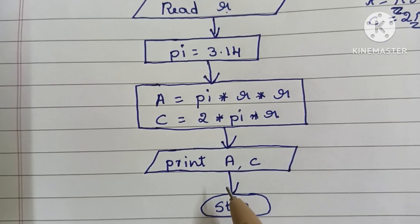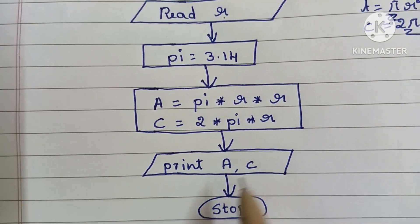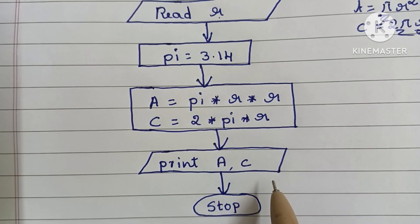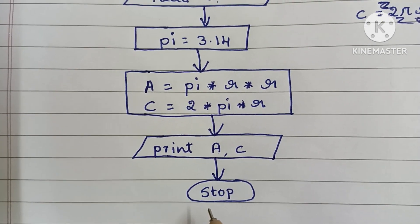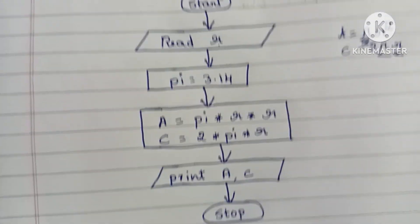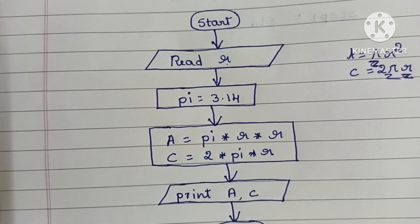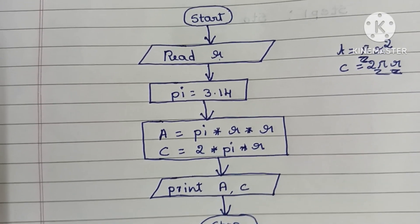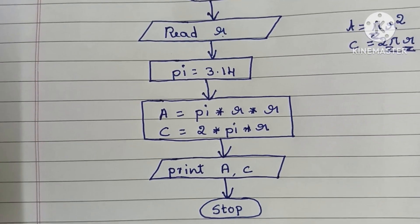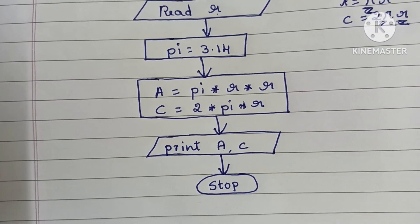Next, we display the output — print A, C — in a parallelogram shape. Finally, we stop the flowchart using a STOP statement. This is the complete flowchart to find the area and circumference of a circle. Thank you for watching — please like and subscribe!